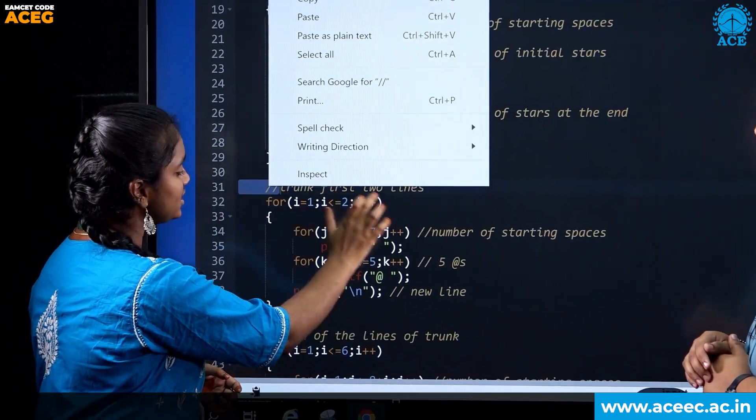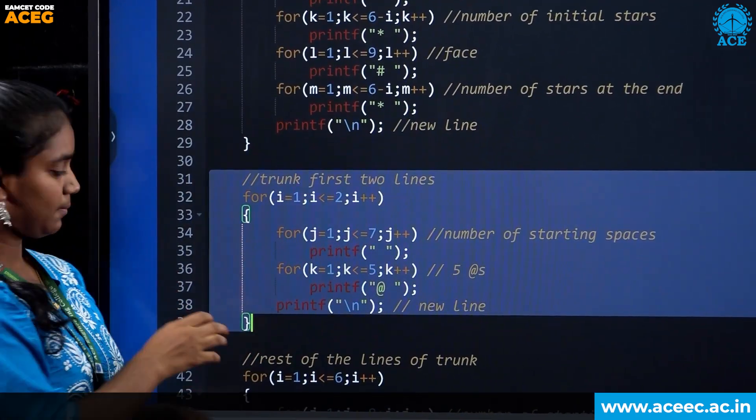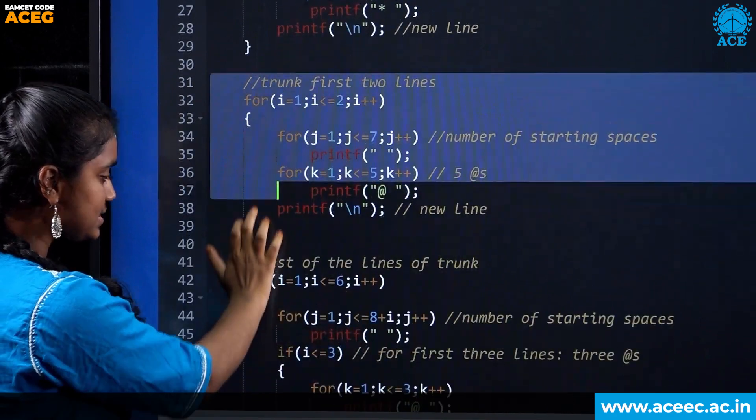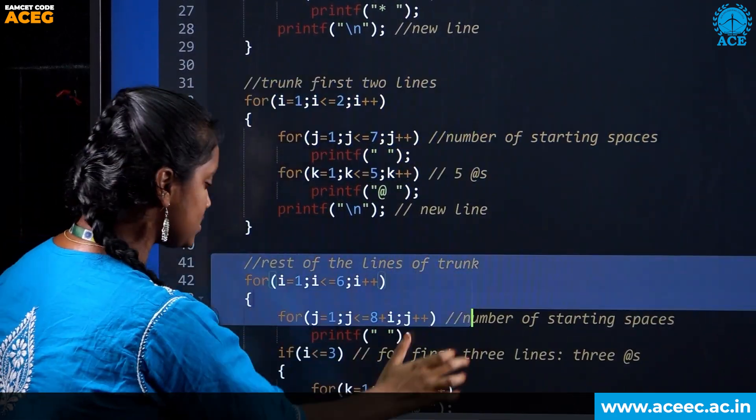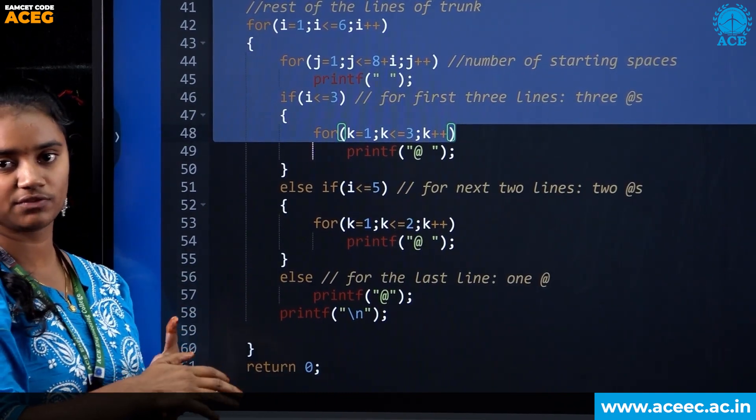Next, we are only printing the first two lines of the trunk. So it will be in the same line. Next, in the rest of the trunk lines, here we use if-else statement with nested for loop to maintain the diagonalization of the trunk.